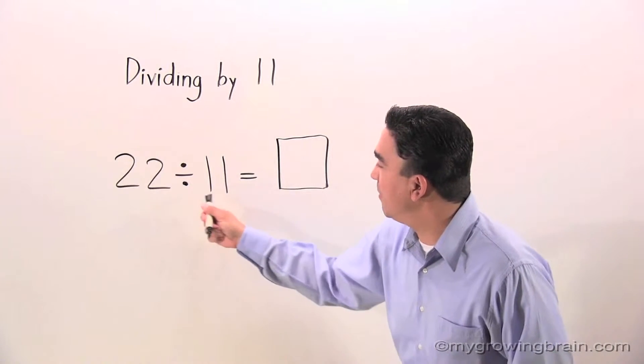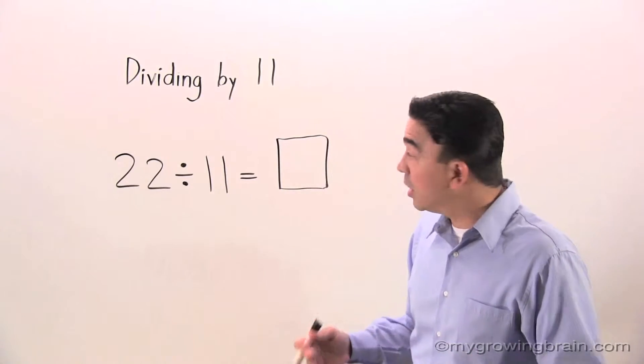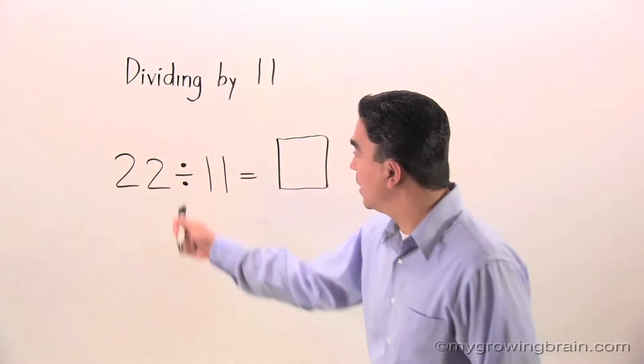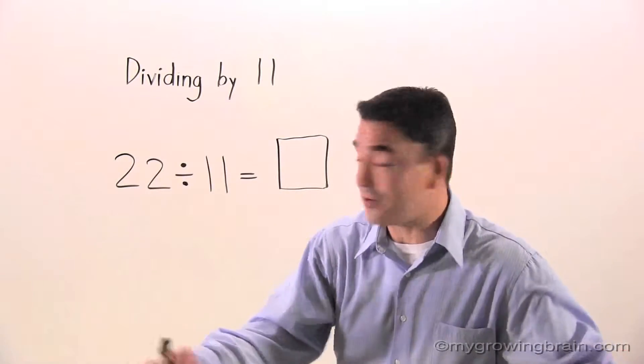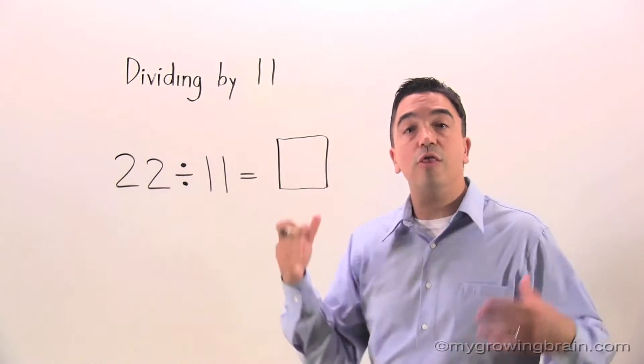22 divided by 11 equals blank. Or, 22, which is the dividend, divided by 11, which is the divisor, equals the box, which is the quotient.